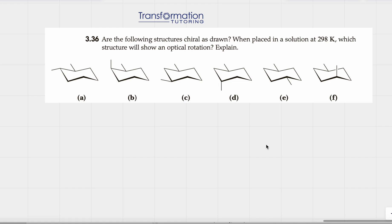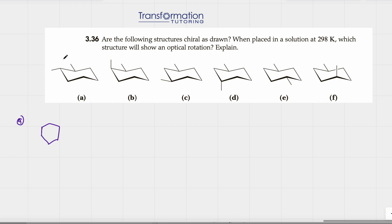The first thing we need to do is recognize that these are chairs, and we're going to redraw them as flat cyclohexane rings. If a substituent is up, I'm going to draw a wedge line, and if a substituent is down, I'm going to draw a dash line.